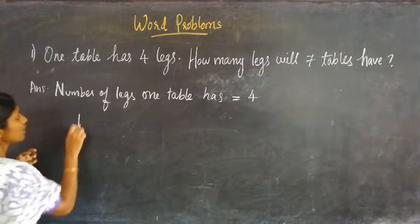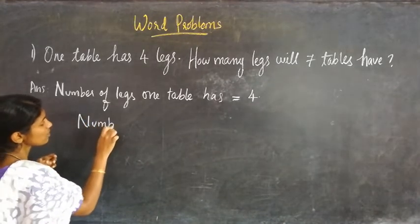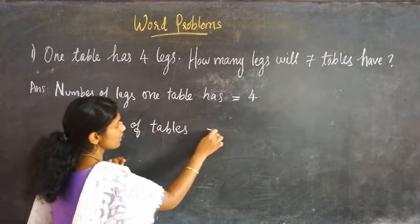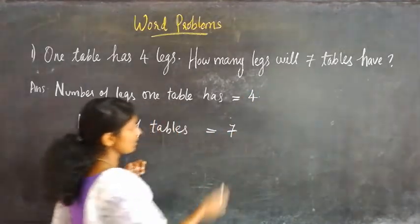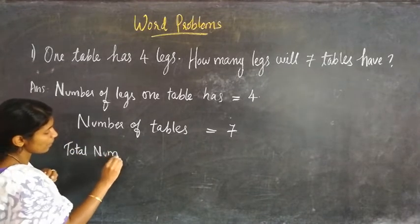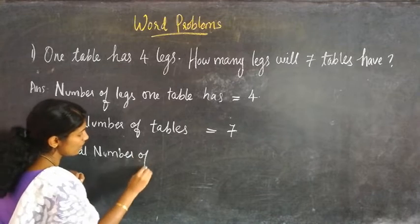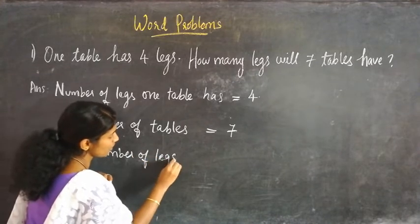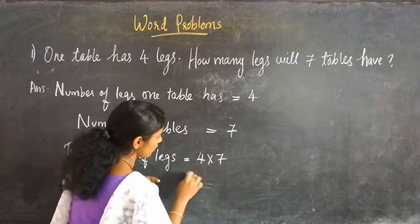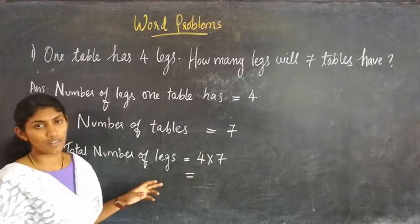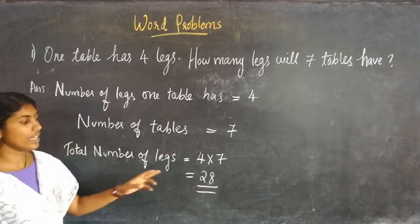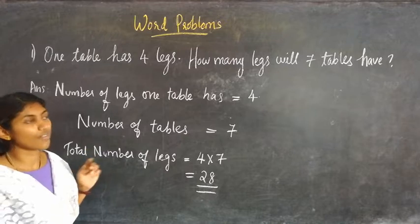Then, number of tables — what is the number of tables? Yes, we have 7 tables. Then you have to find the total number of legs. For that you have to multiply: that is 4 into 7. What is 4 sevens? The answer is 28. That means you have 28 legs for 7 tables.